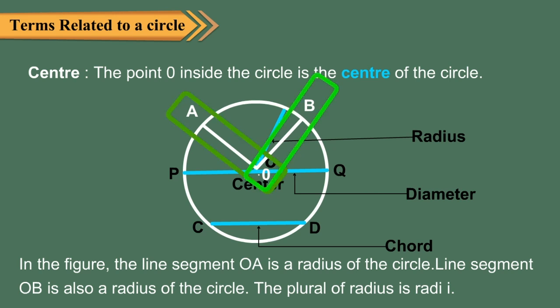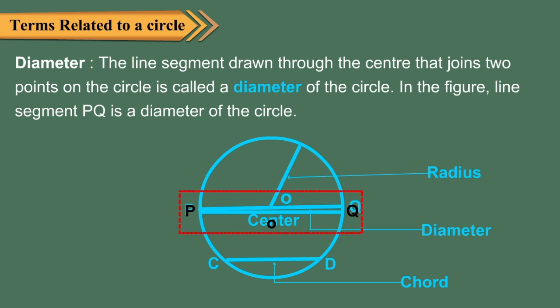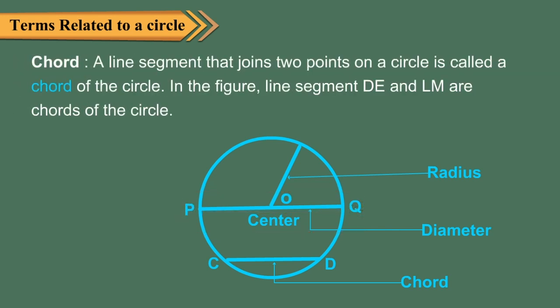Diameter: the line segment drawn through the center that joins two points on the circle is called a diameter of the circle. In the figure, line segment PQ is a diameter of the circle. Chord: a line segment that joins two points on a circle is called a chord of the circle. In the figure, line segments AB and LM are chords of the circle.